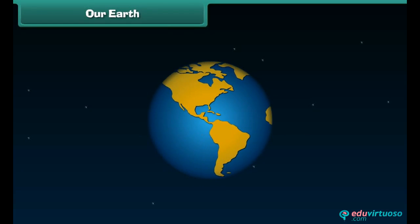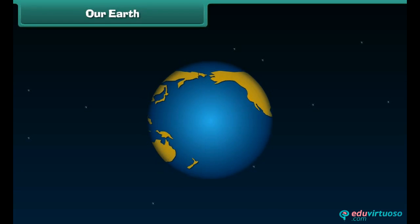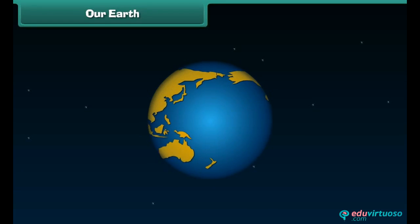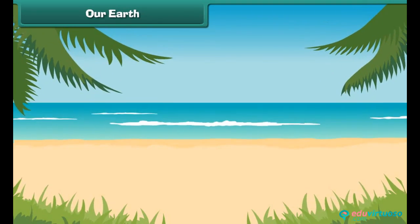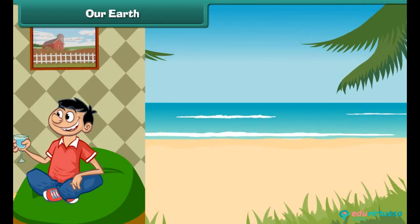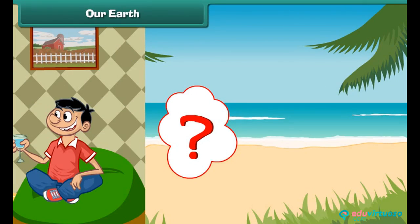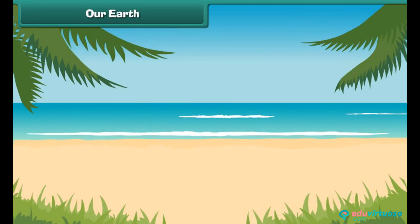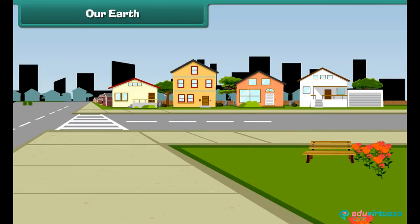Friends, we live on a planet called Earth, which is round in shape, just like an orange. It has a sky above and oceans filled with water below. We breathe in air and drink water daily. But do you think that we can live without air and water? No, it is not possible.